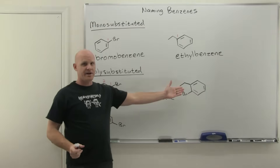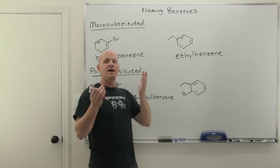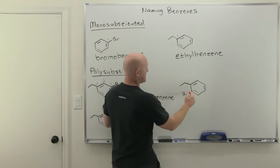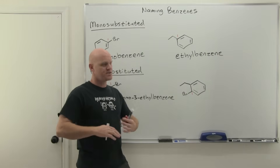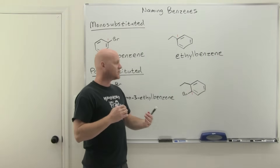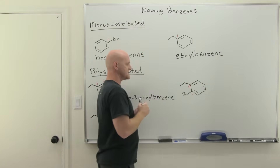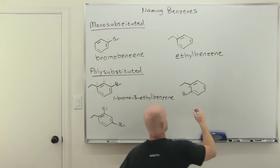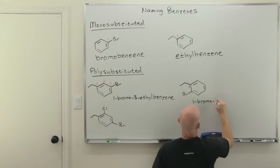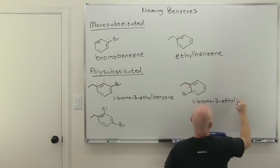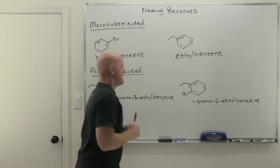Same approach with the analogous example. Again, it could be one and two either way — a numerical tie — and the alphabet breaks the tie with bromo again. The key point here is that we count clockwise this time, because that gives the second substituent the lower number. Naming in alphabetical order: 1-bromo-2-ethylbenzene.